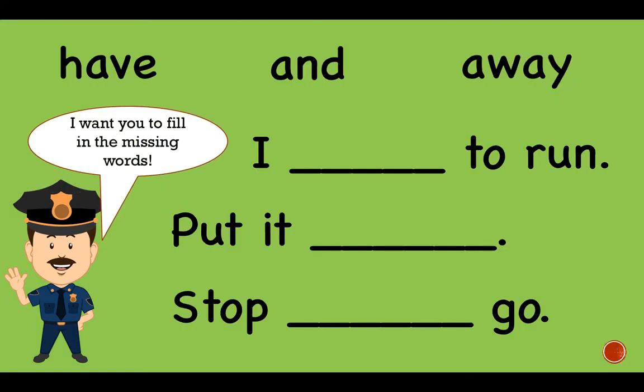Now the policeman says I want you to fill in these missing words. So you need to read the sentence and try to figure out which of these words have to go in the sentences. So the first one says, try to read it: I blank to run. So what would it be? I have to run, I and to run, or I away to run? That's right, I have to run.